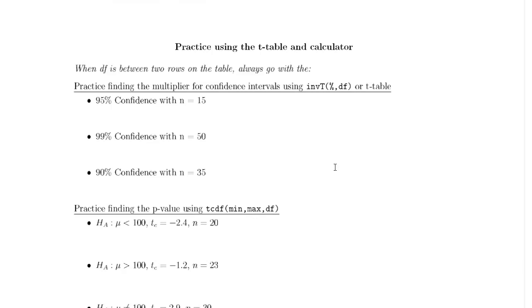You're going to be given a table that's on the next page of the notes packet, and you can search that table to figure out what your multiplier should be. For example, if we want to have a 95% confidence interval with n equal to 15, that means that our degrees of freedom is equal to 14.